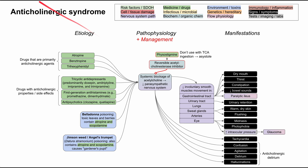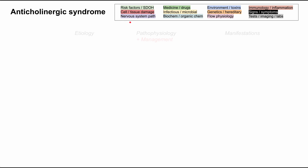This is a mechanism of disease map for anticholinergic syndrome, also called anticholinergic toxidrome. I'll be talking about the etiologies, the pathophysiology, the manifestations, and a few quick words on the management of this syndrome. As in all of these flowcharts, each of the boxes are color-coded according to the legend in the top right.